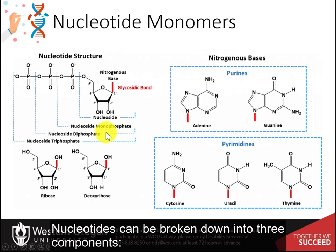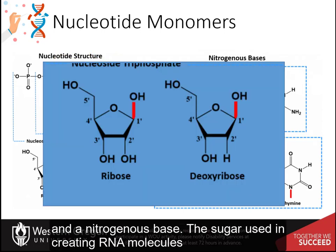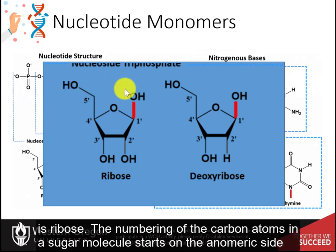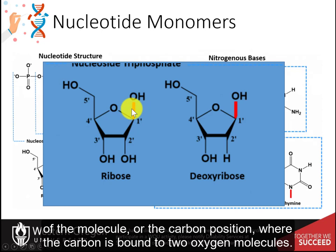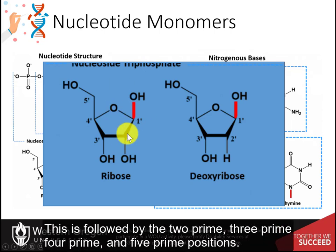Nucleotides can be broken down into three components: a sugar, a phosphate group, and a nitrogenous base. The sugar used in creating RNA molecules is ribose. The numbering of the carbon atoms in a sugar molecule starts on the anomeric side of the molecule, or the carbon position where the carbon is bound to two oxygen molecules. In the case of ribose, this is carbon one prime, followed by the two prime, three prime, four prime, and five prime positions.